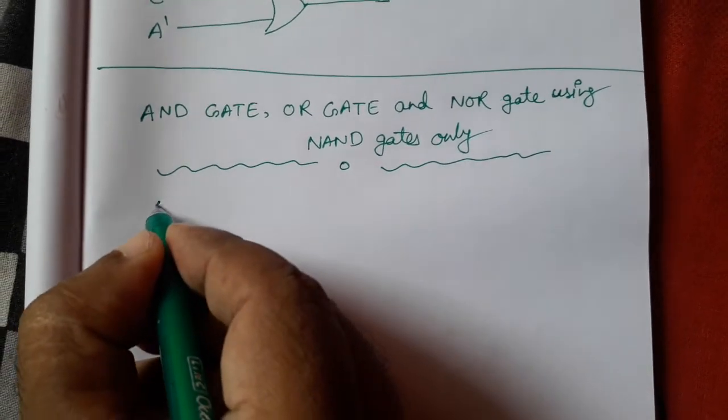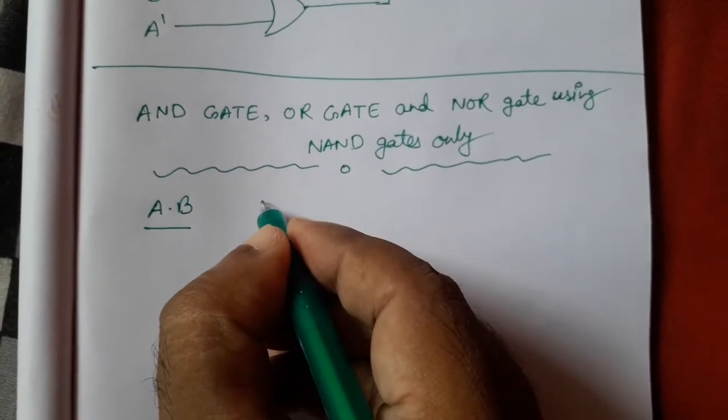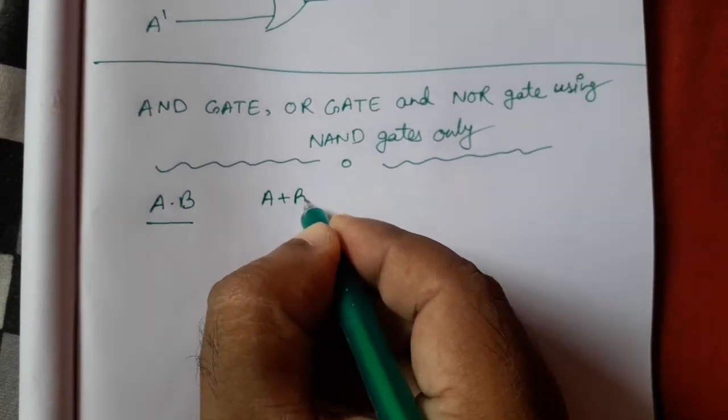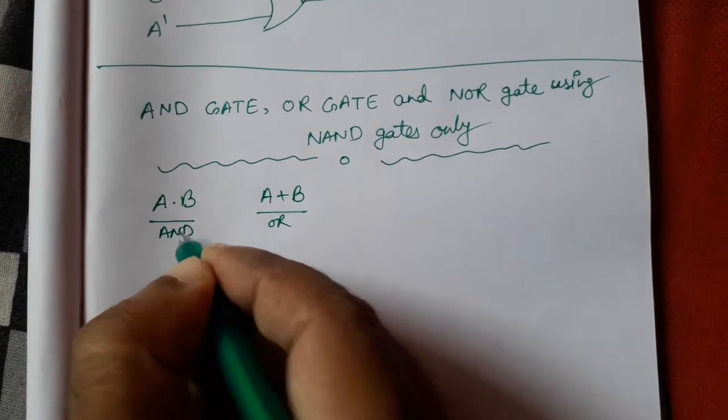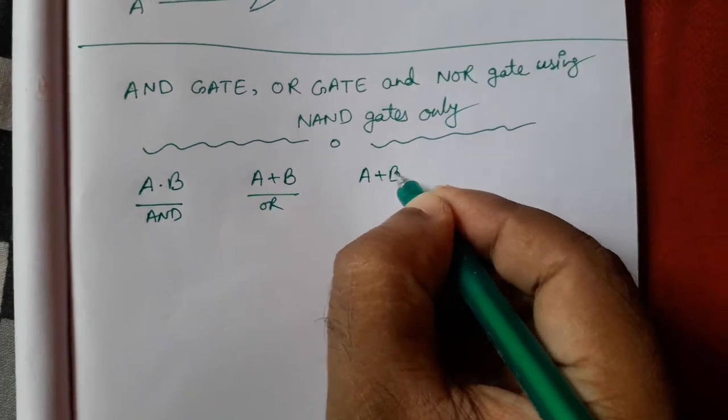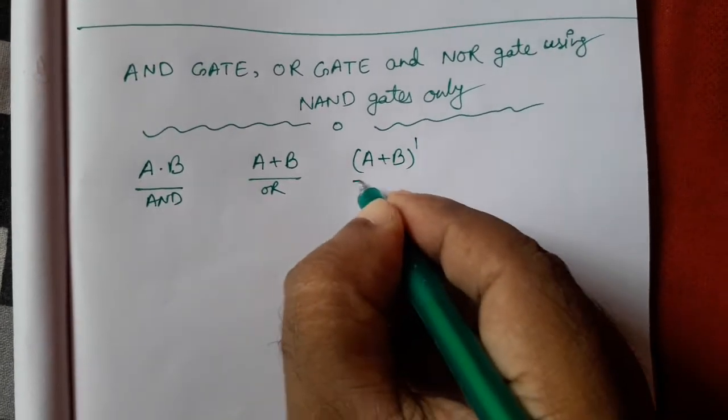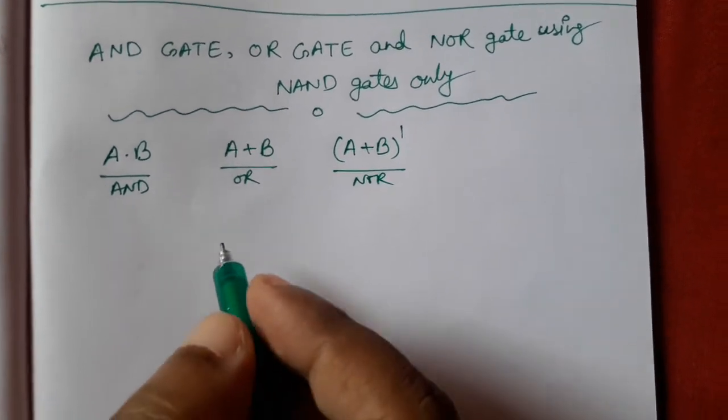We know AND gate means A into B, that is our AND gate. Similarly, OR gate means A plus B, that is OR gate, and NOR gate means A plus B whole complement. That is our NOR gate. These things we will construct.